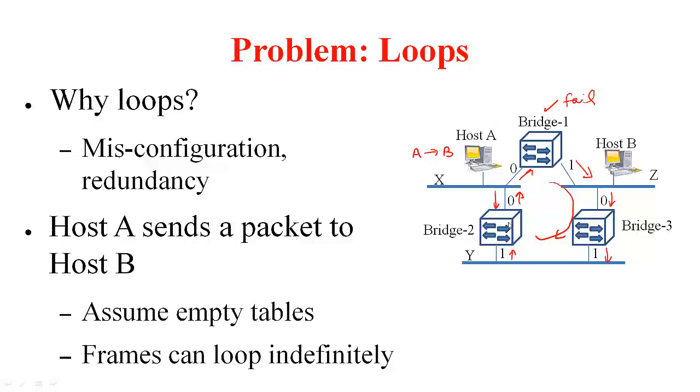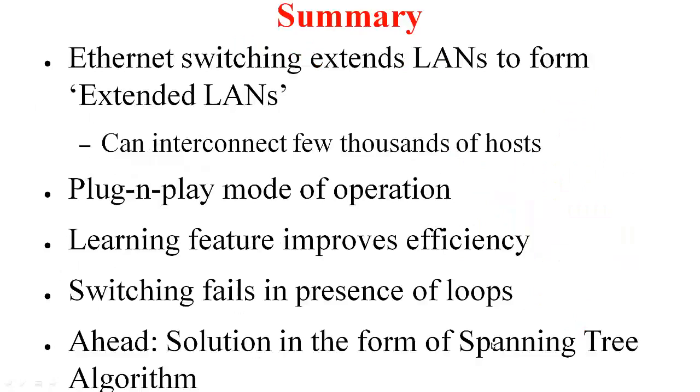So, as you can see there is a frame that is going to circulate like this because of this loop. Similarly, when host A originally sent the packet bridge 2 is going to get and this is going to send the packet like this. So, there is one frame circulating in this fashion through bridge 1 and another frame circulating in this fashion via bridge 2. And these frames can loop indefinitely. You do not want that because it wastes the capacity of the ethernet. So, how do you solve it? We will cover it soon.